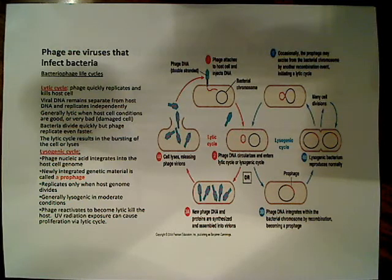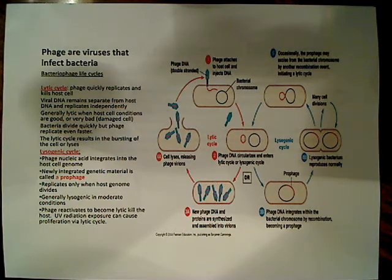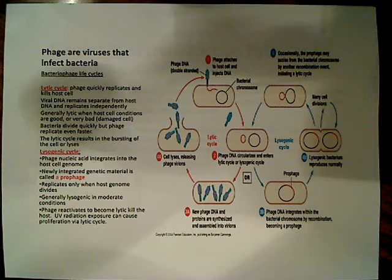Before I talk about transduction specifically, I want to talk about bacteriophage life cycles. There are two separate life cycles that we talk about generally: the lytic life cycle and the lysogenic life cycle. The lytic cycle basically means the phage quickly replicates and kills the host cell, resulting in death of the host cell — lysis.